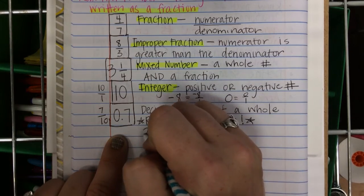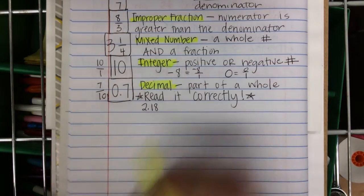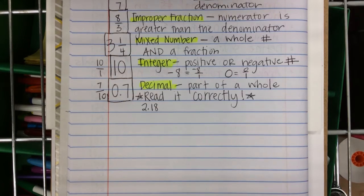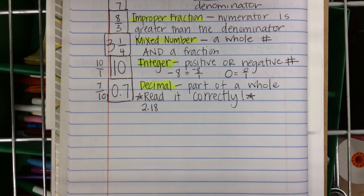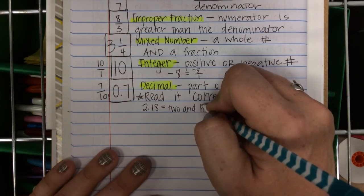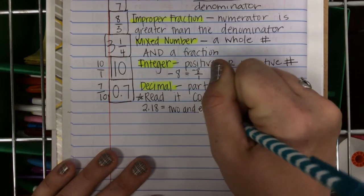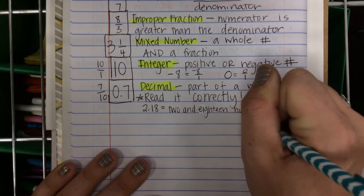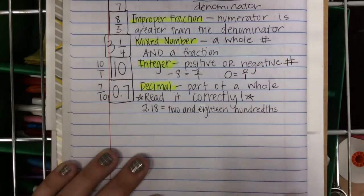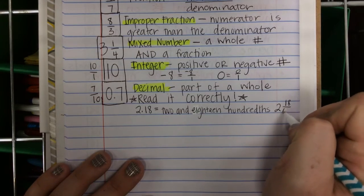Let's practice: 2.18. How do you make that into a fraction? It's a rational number because I can make it into a fraction. It's not 18 tenths — it's 18 hundredths, so 218 over 100. I know it can simplify, but that's okay.